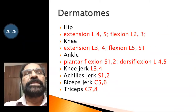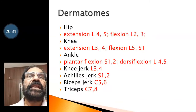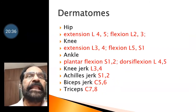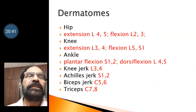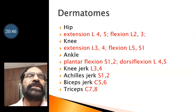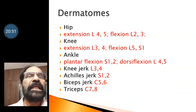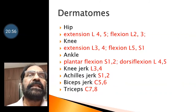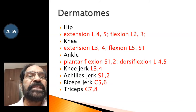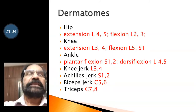Coming to myotomes: hip extension is by L4 and L5; hip flexion is by L2 and L3; knee extension L3 and L4; knee flexion L5 and S1; ankle plantar flexion S1 and S2; dorsiflexion L4 and L5. Knee jerk reflex is L3 and L4. Ankle jerk reflex is S1 and S2. Biceps jerk is C5 and C6. And triceps jerk is C7 and C8.